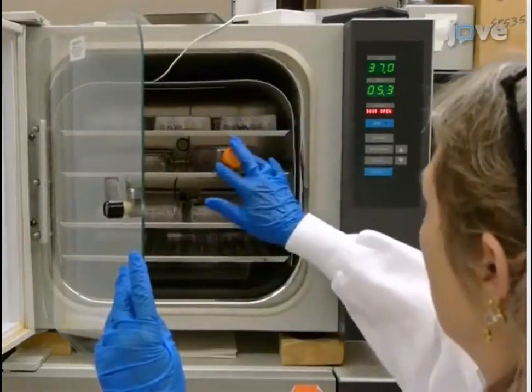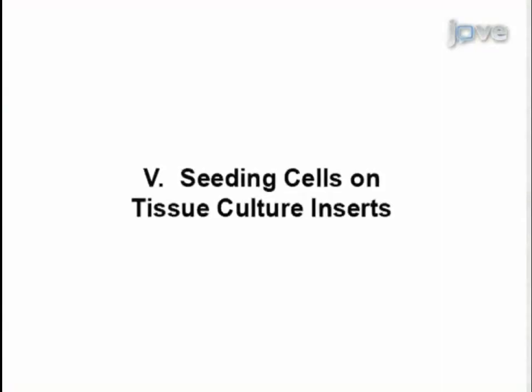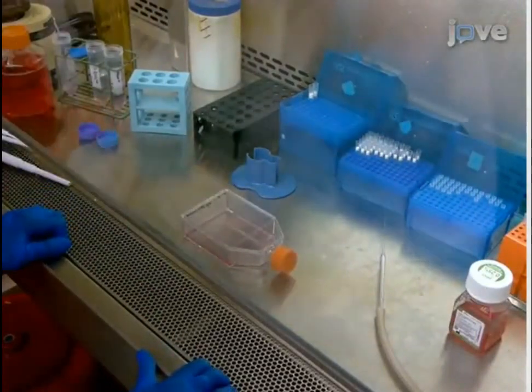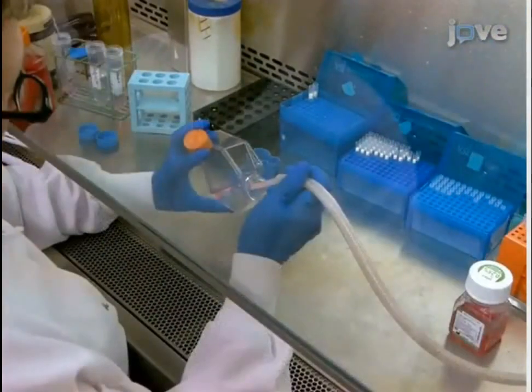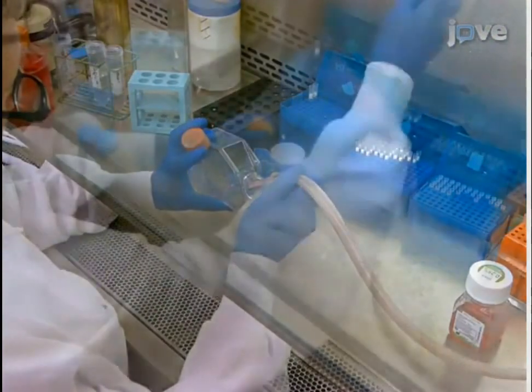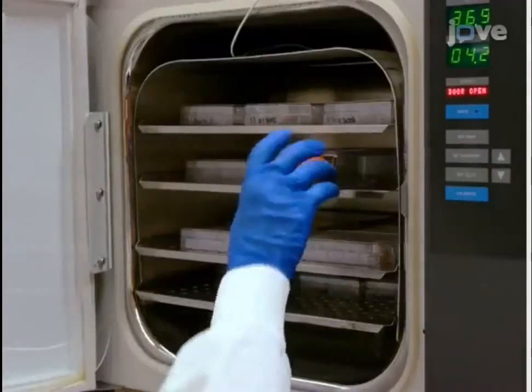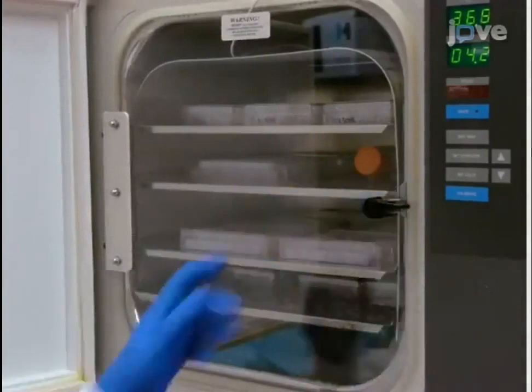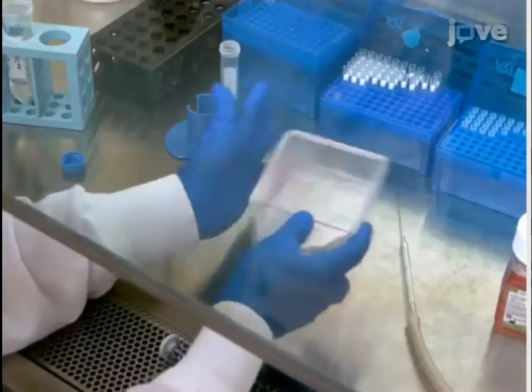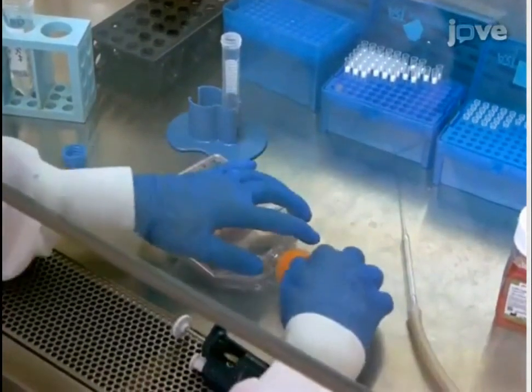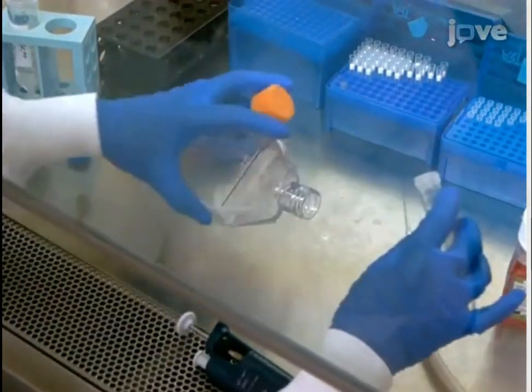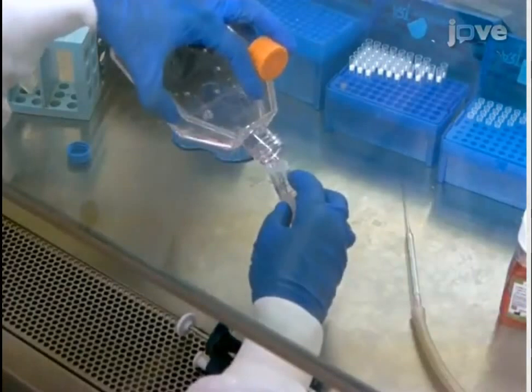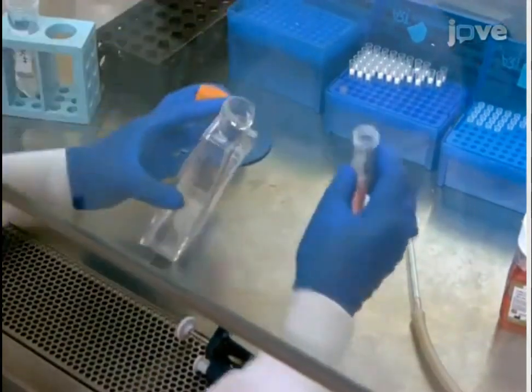After expanding NECs in flasks, the next step is to seed cells on tissue culture inserts. Remove the media from the T75 flask and add four milliliters trypsin. Incubate cells at 37 degrees Celsius for two to three minutes until the cells are detached. Dislodge cells by tapping the flask and pipetting up and down. Transfer to a 15 milliliter tube containing SBTI. Rinse the flask with two milliliters Hanks balanced salt solution and add the rinse to the 15 milliliter tube.